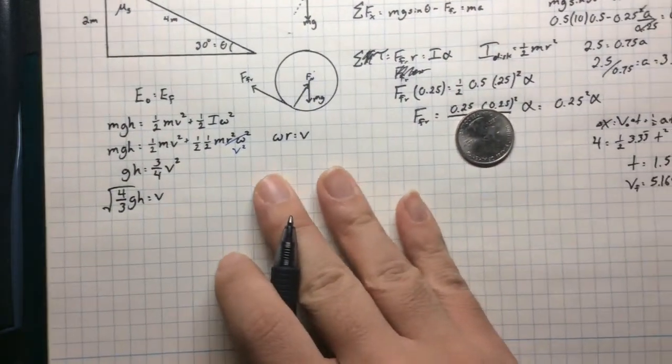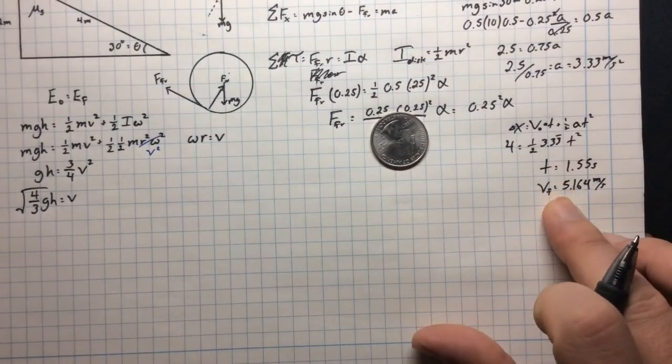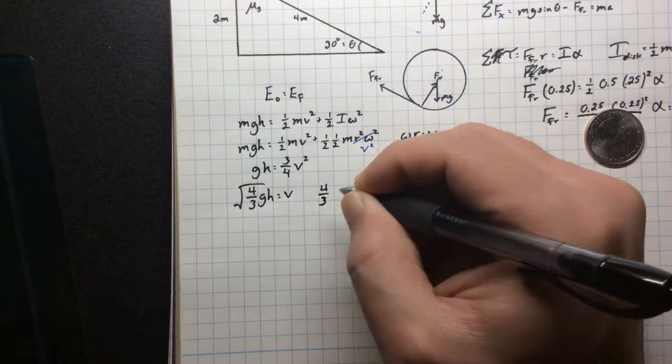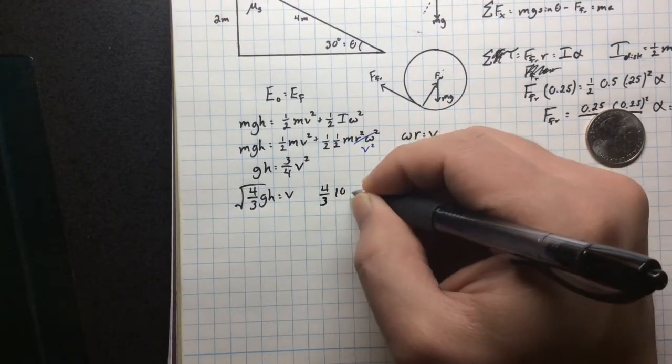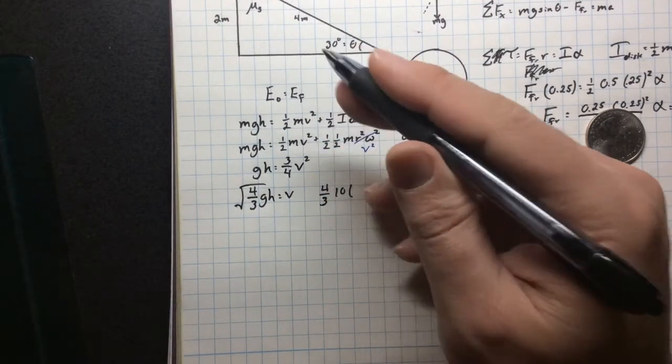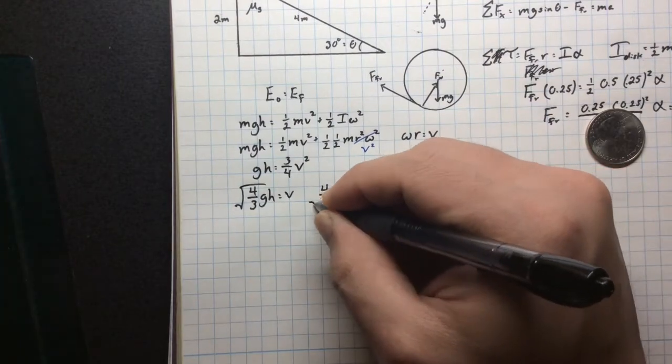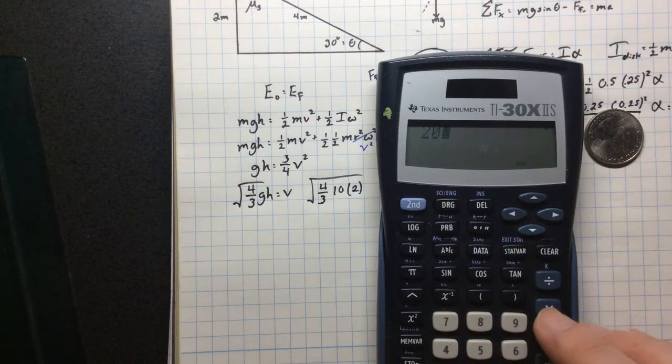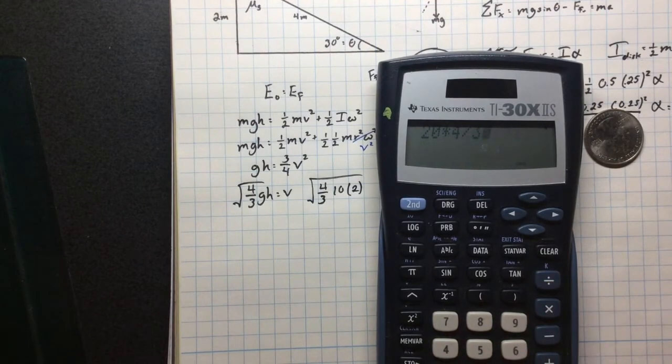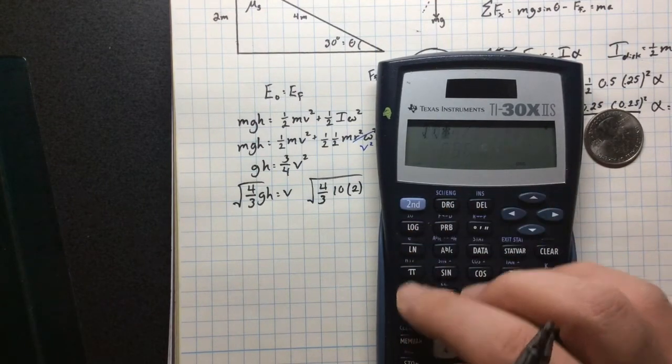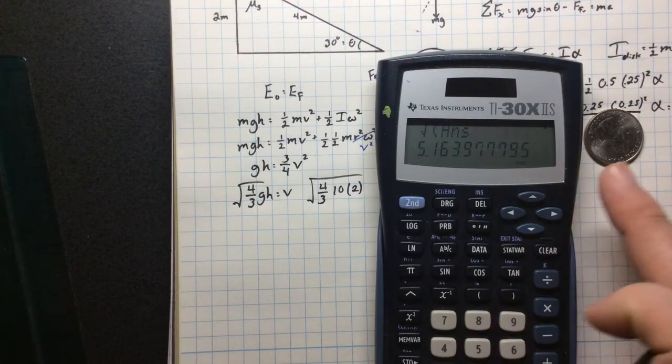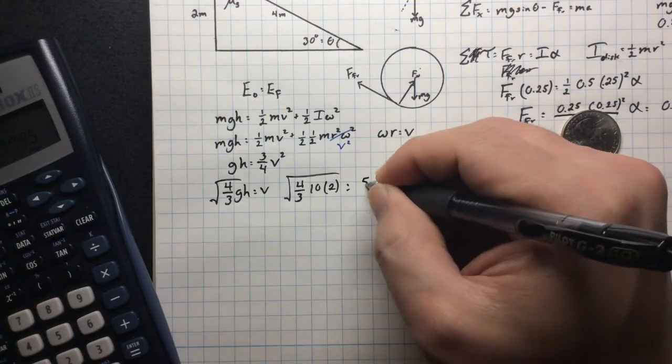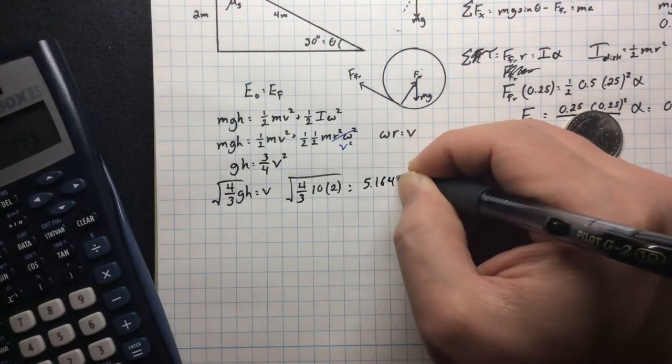Let's plug some numbers in. Got a four thirds. Got a G, ten. Got an H, which is two. And we're going to square root that sucker. So let's see what we get. Ten times two is going to be twenty. Twenty times four divided by three and then we're going to square root it. Looking good. Five point eight. We got five point one six four. Just like we had on the other side. So five point one six four meters per second is going to be our translational velocity. That's how fast this thing is going to be going down like this.